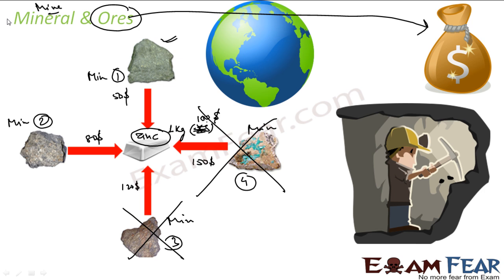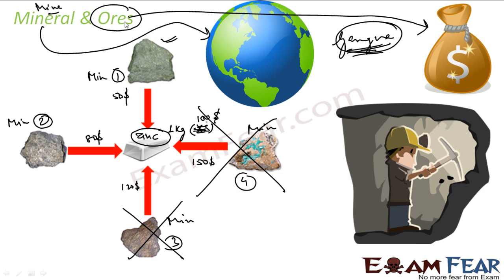We also introduce the term gangue — these are the unwanted particles in the ore, such as stones, mud, or trace amounts of other metals. In summary: a mineral is anything occurring naturally in the earth's crust; an ore is a mineral from which metal can be extracted economically; and gangue is the unwanted material in the ore.